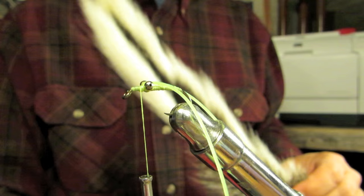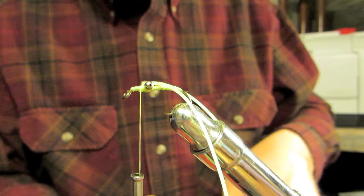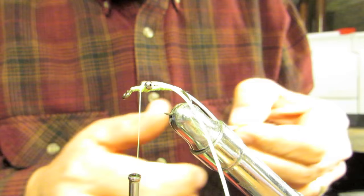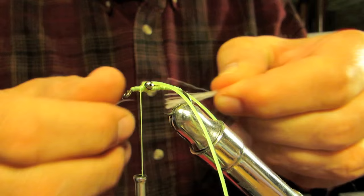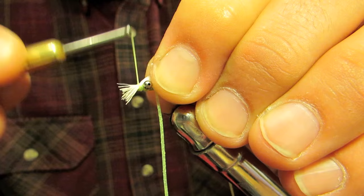Now I'm going to take bucktail, white in this instance. This will be the underbelly of the fly. And just a few strands. You don't need much white. Just a few strands. There's probably a dozen in there, and I'm going to take some of those out. Got me a few strands. I'm not even going to even them up.